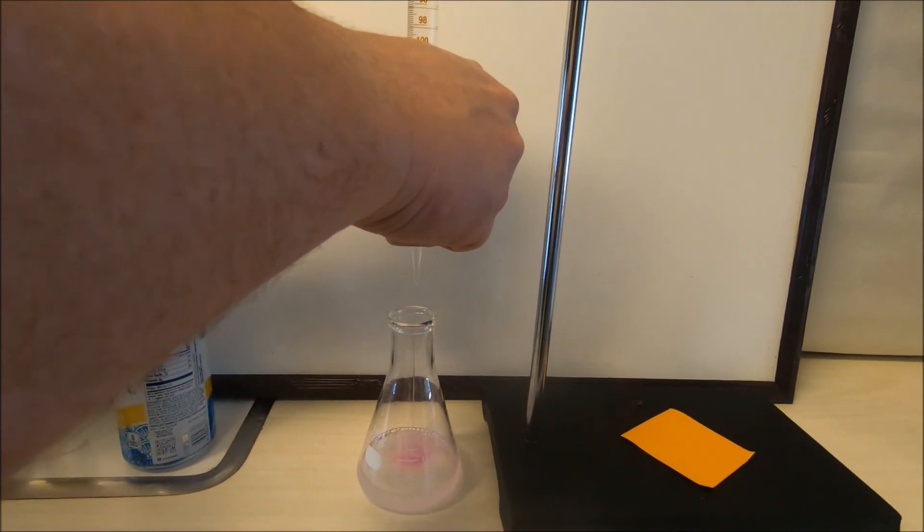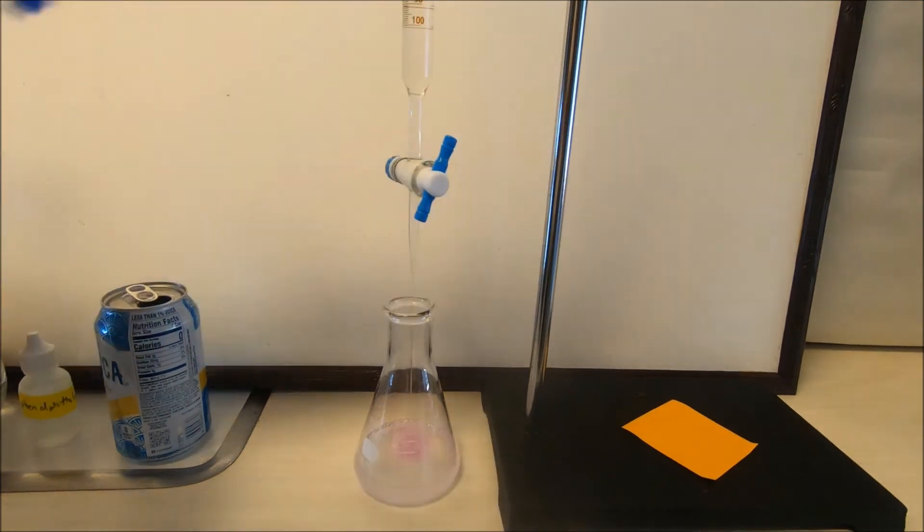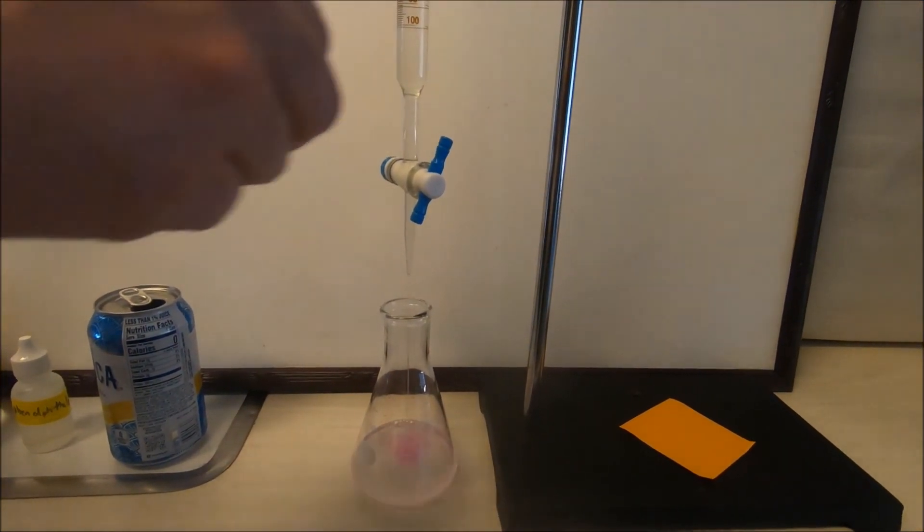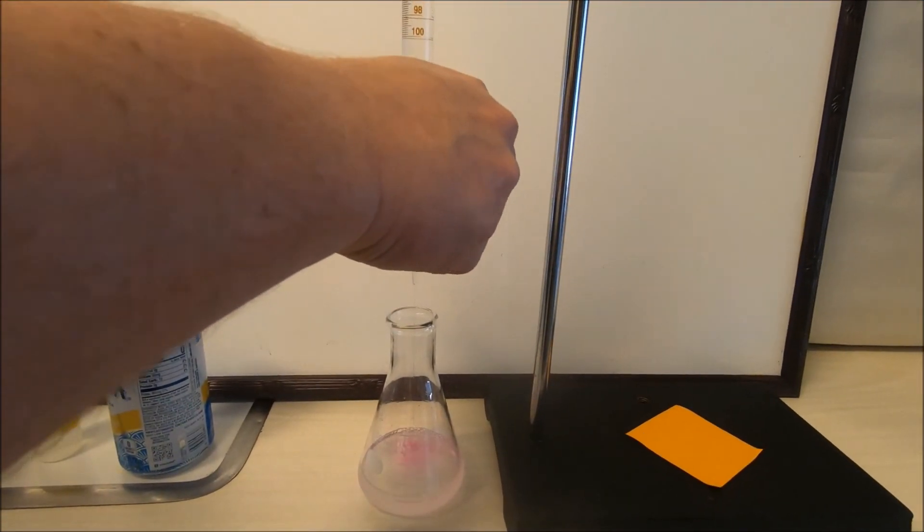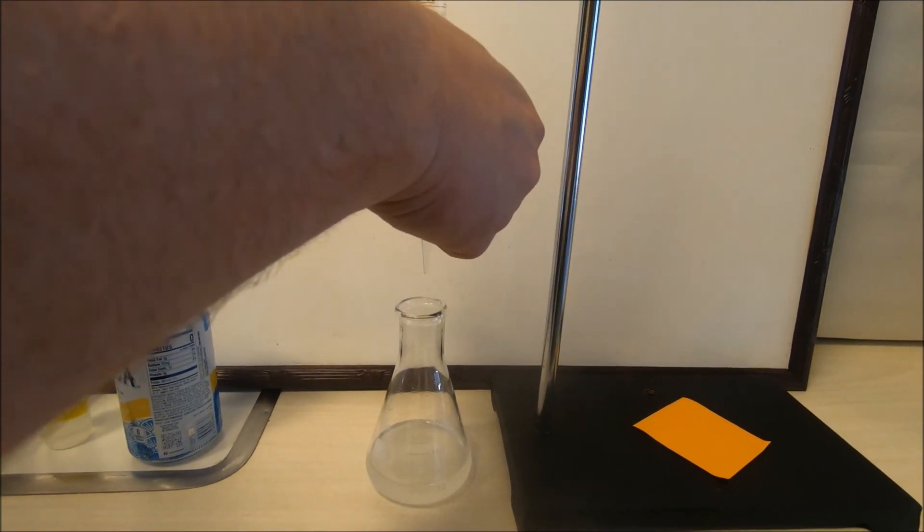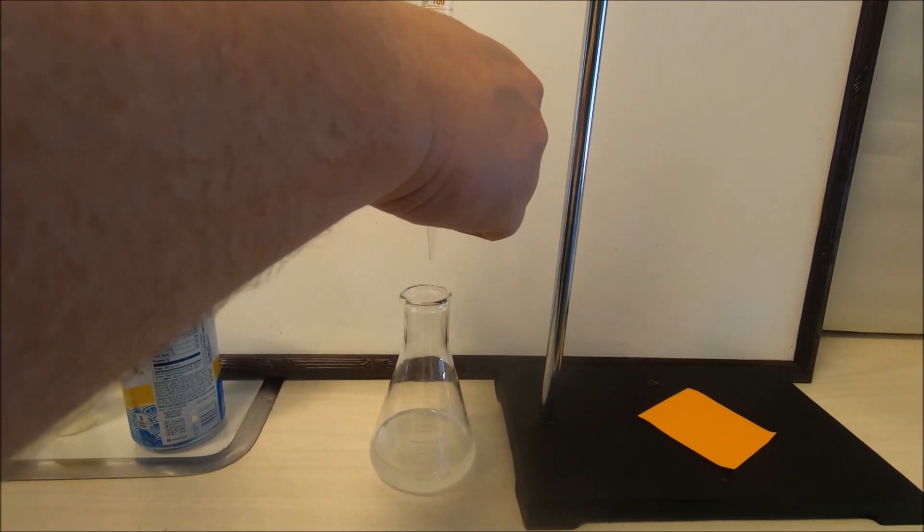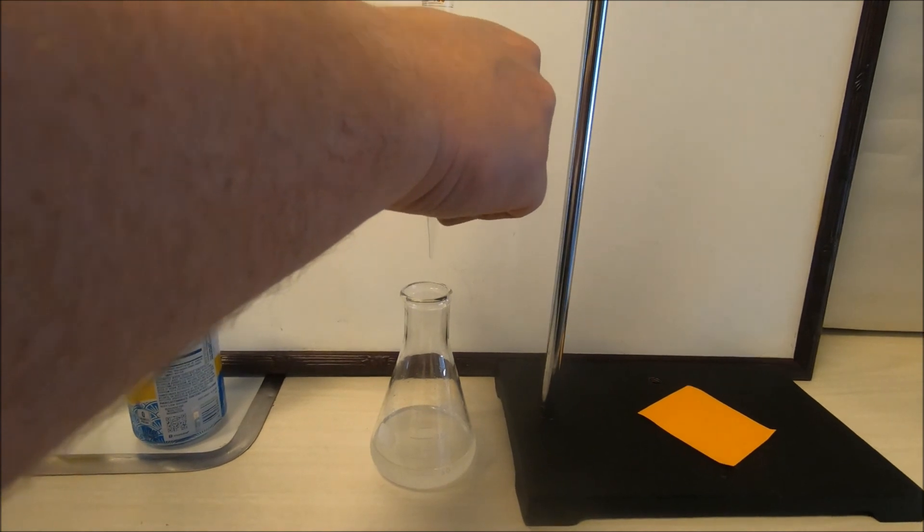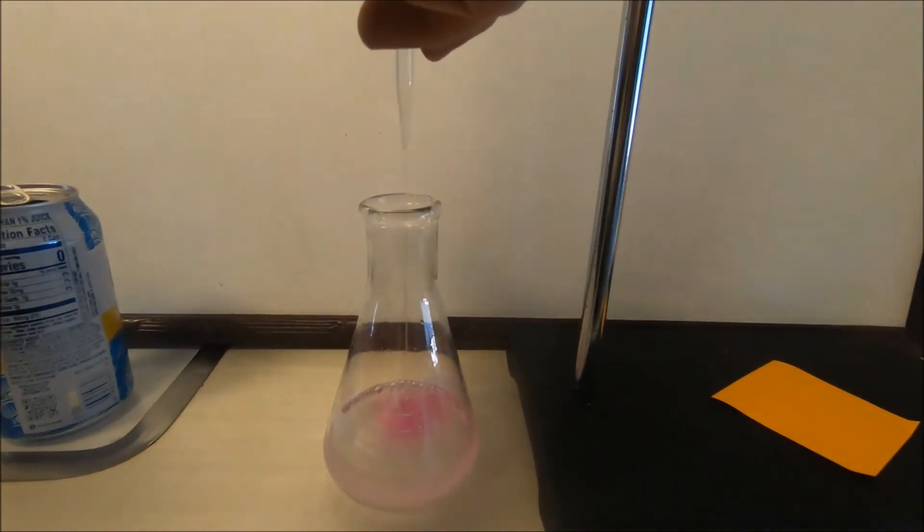We can notice that right away we're starting to see a pink color form, but that pink color is going away right away. Anytime we turn it back it goes back to its original clear color because that sodium hydroxide is neutralizing the acid, but there's still more acid present.